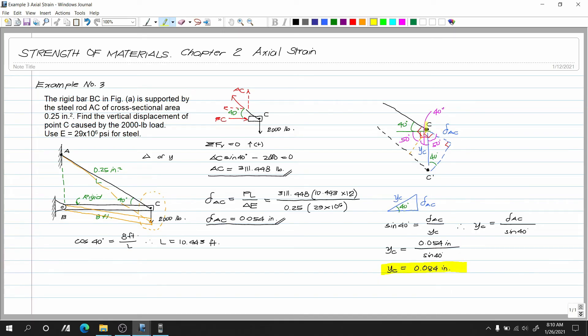So kung napansin nyo downward yan pababa yung ating deformation. Downward pababa may possible naman na maging pataas yan. So ito yung ating displacement sa ating example number 3. So this is our example number 3 for chapter 2 axial strain and ang kasunod na natin topic sa chapter 2 is yung ating shear strain. Thank you.